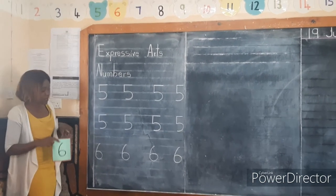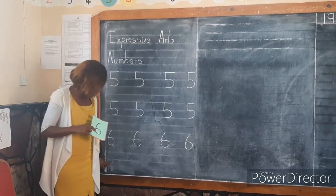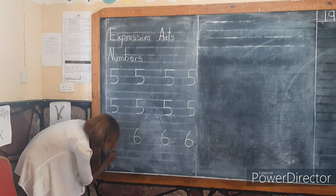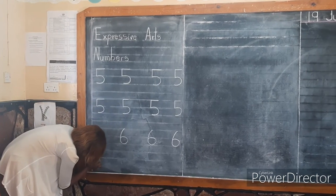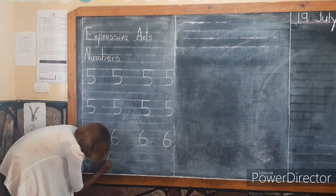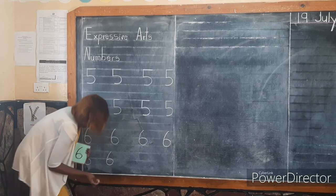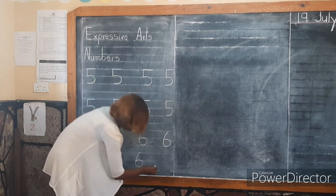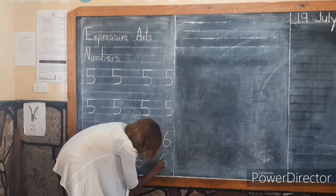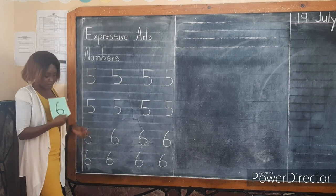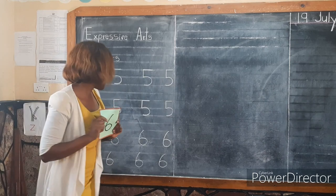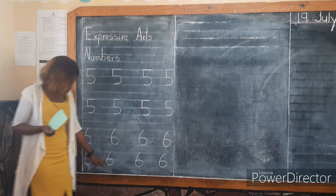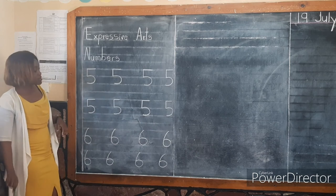We are going to write the last line for number 6. Let's write it together. Down. Round. We have written number 6. Remember, when writing it should always sit on the line — this number 6 is sitting on the line.